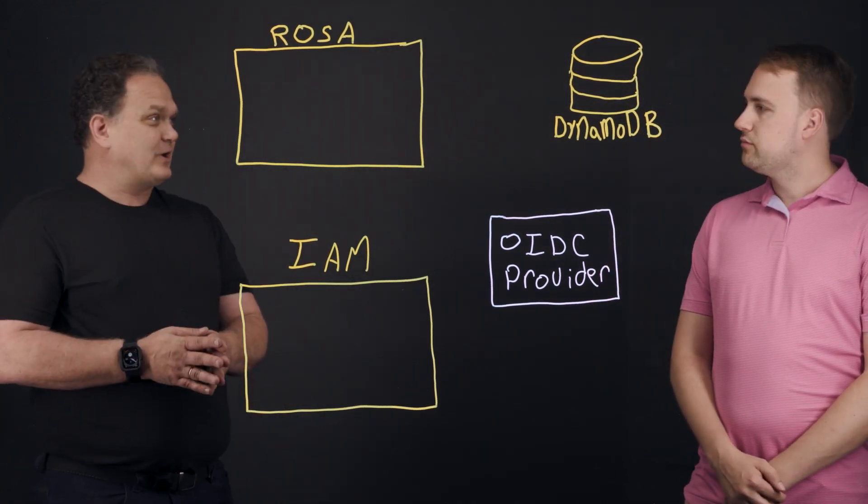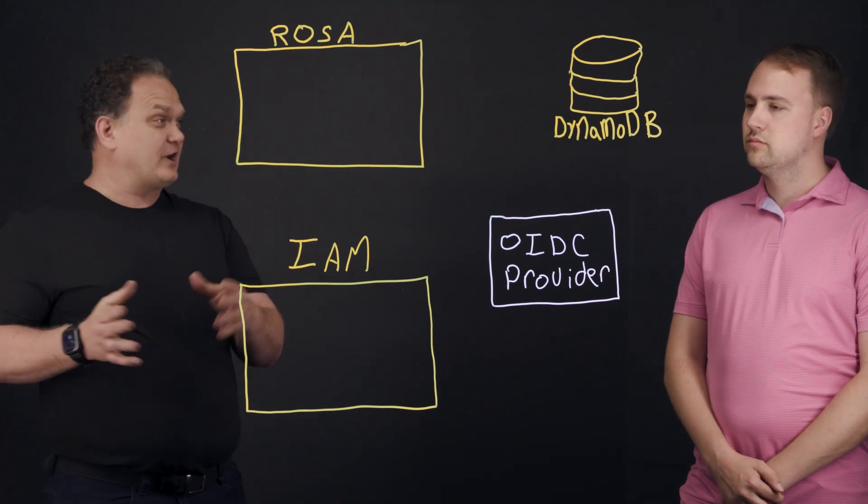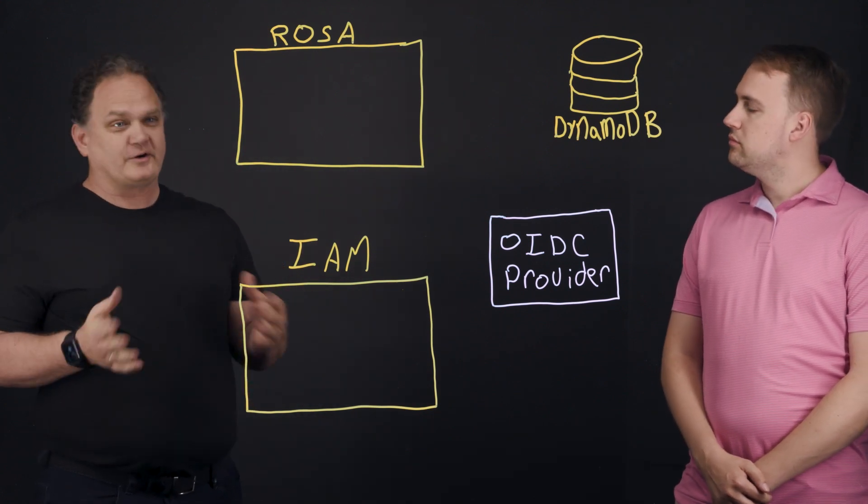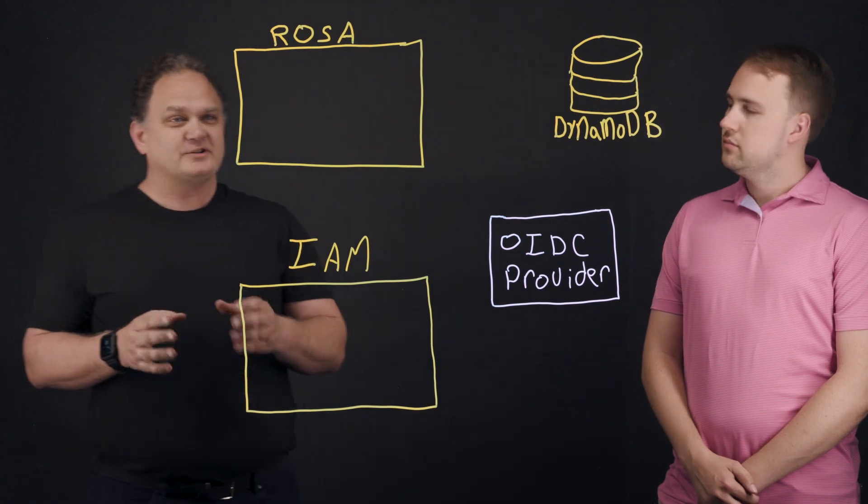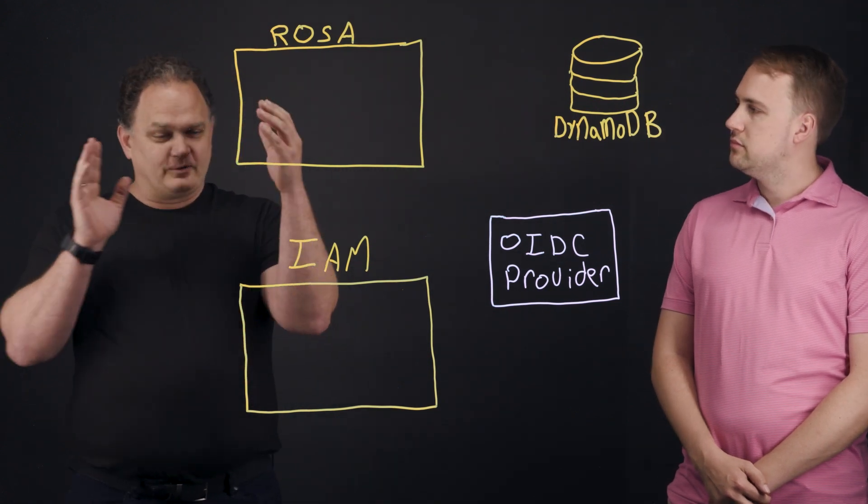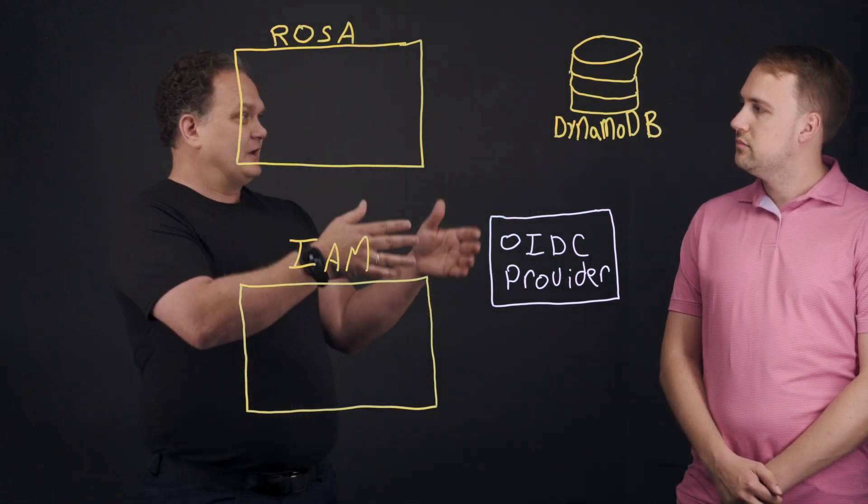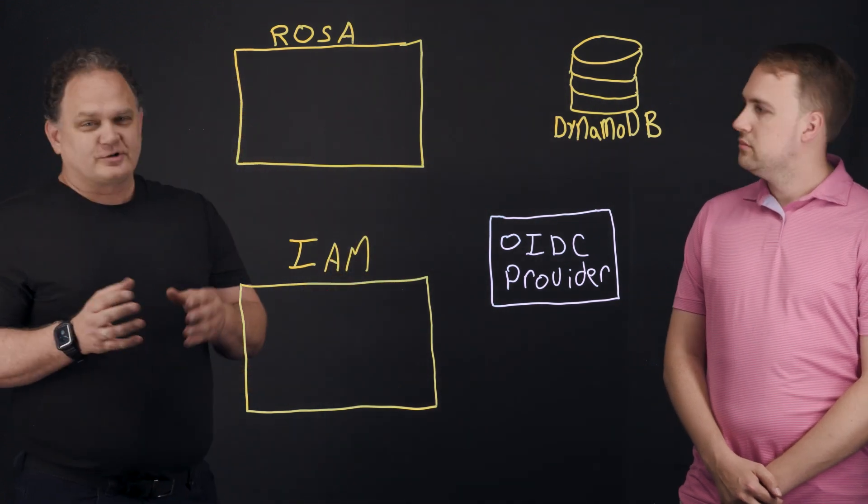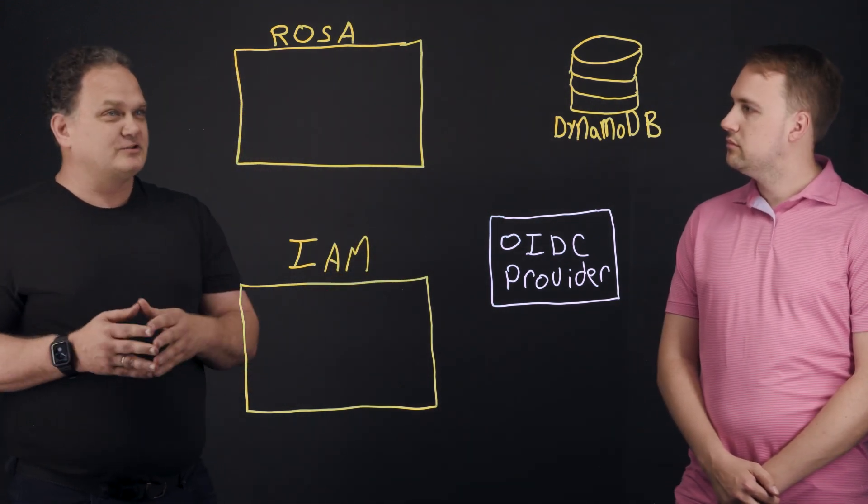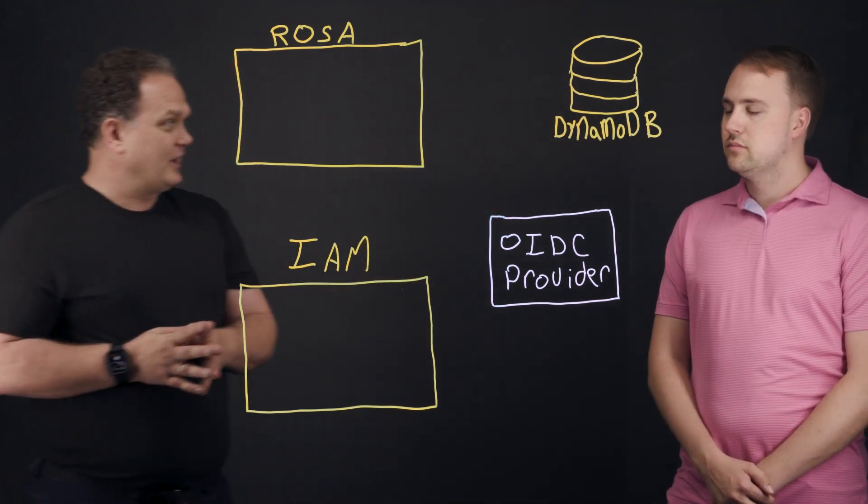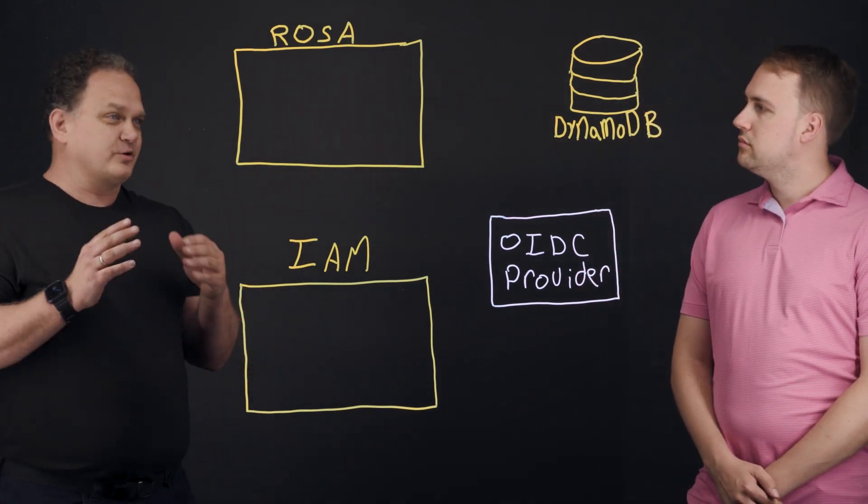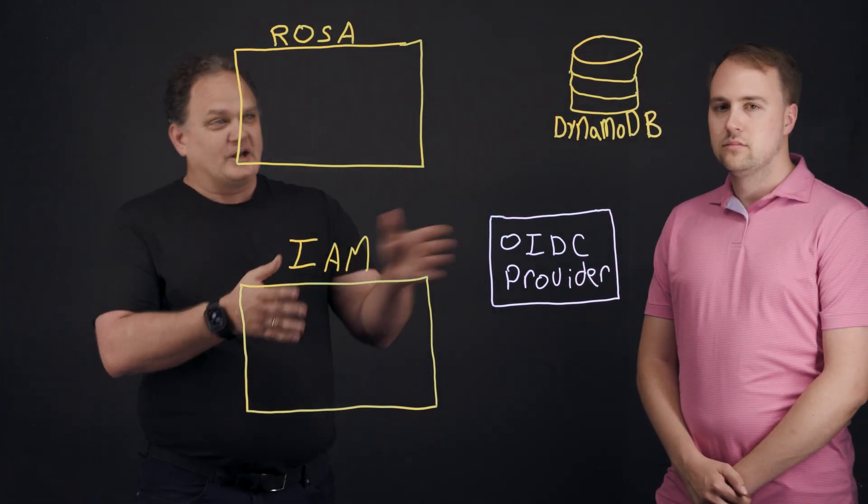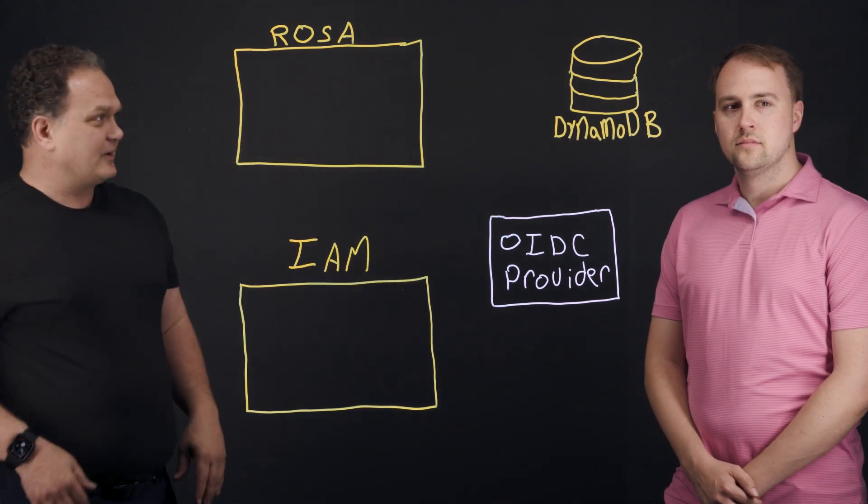Yeah, there's several reasons why. Using IRSA follows the AWS Well-Architected Framework. We're creating a trust policy between our pod that's running our application and DynamoDB. And it's going to use short-term credentials that are going to rotate each time we call into DynamoDB. So it provides a more secure and much more granular connection to the database.